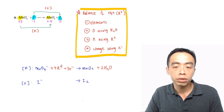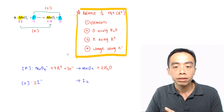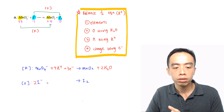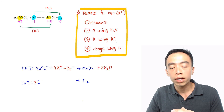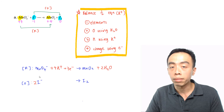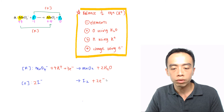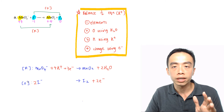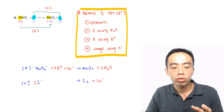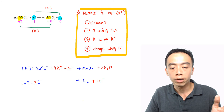For the oxidation half equation with I- and I2, it's fairly straightforward. First, balance elements: I need 2I- on the left-hand side. Oxygen using water — no oxygen to balance, so we skip. Hydrogen using H+ — no hydrogen to balance, so we skip. For charge: left-hand side is -2, right-hand side is neutral, so I need 2 electrons on the right-hand side. Oxidation is the loss of electrons, so I expect electrons on the right-hand side — I- becomes I2 and loses these electrons.